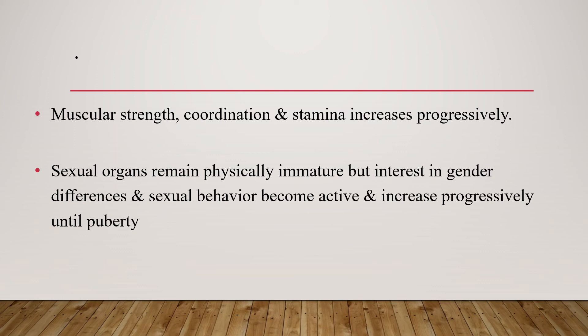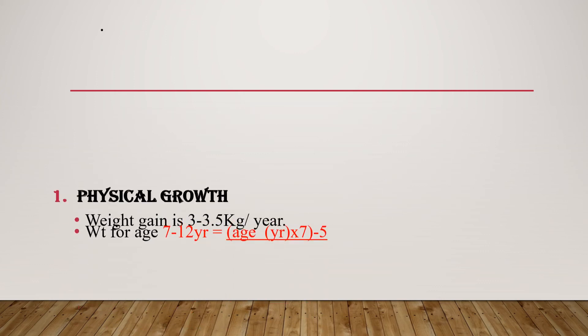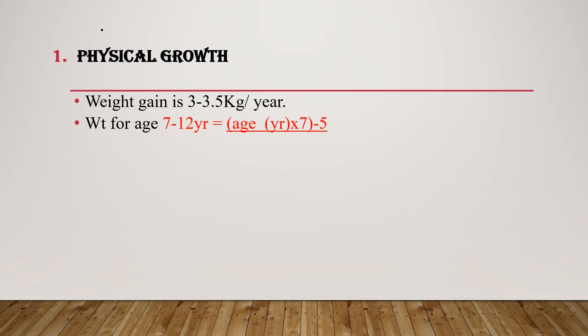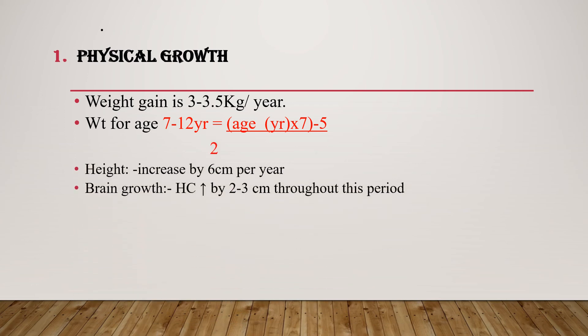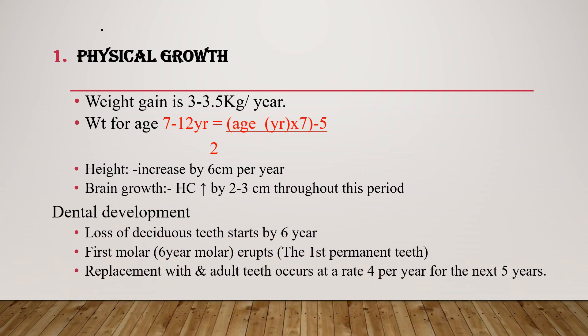Physical growth at school age: weight gain is around 3 to 3.5 kg per year, estimated by age in years times seven minus five divided by two. Height increases by six centimeters per year. Head circumference increases by two to three centimeters throughout this period. Dental development: loss of milk teeth starts at six years; the first permanent tooth is the first molar (six-year molar), and replacement with adult teeth occurs at a rate of four per year for the next five years.